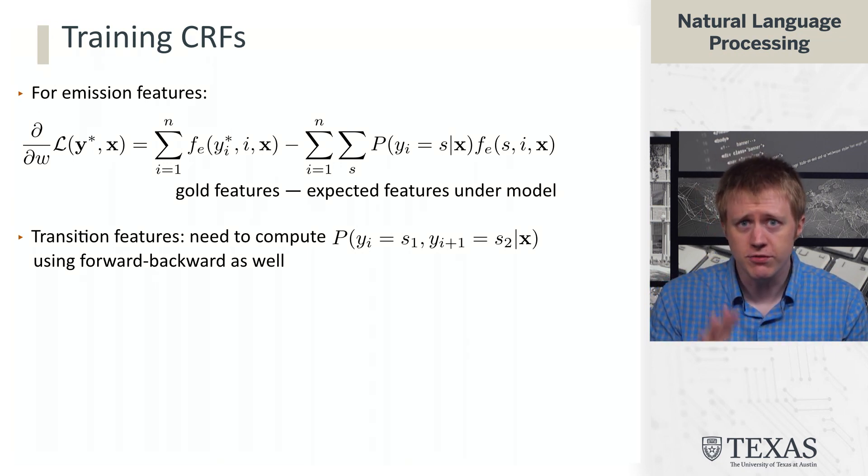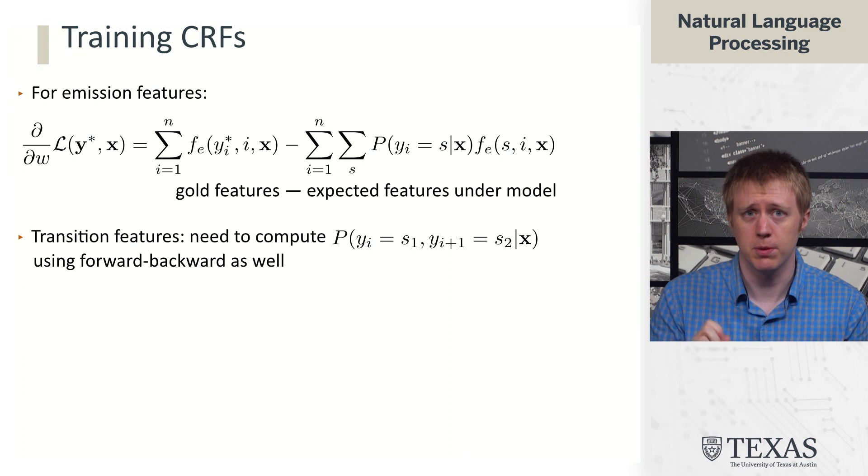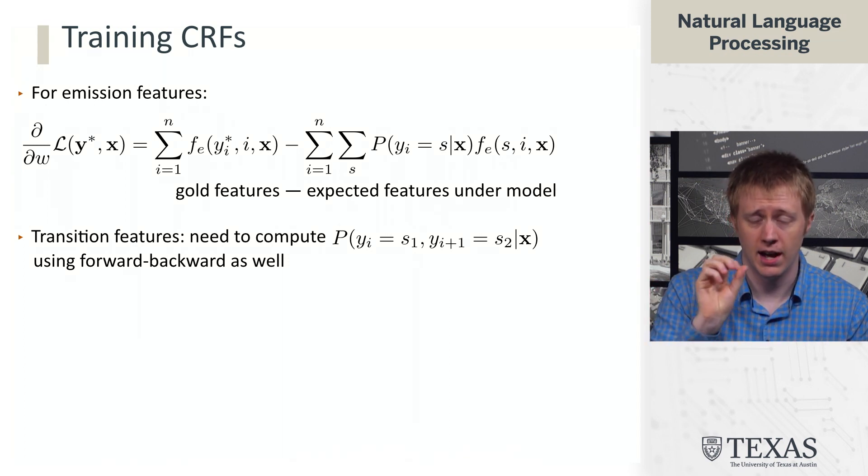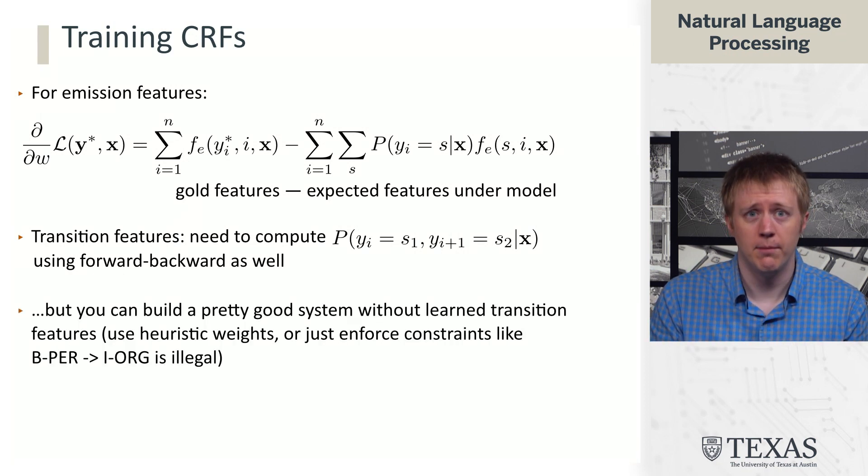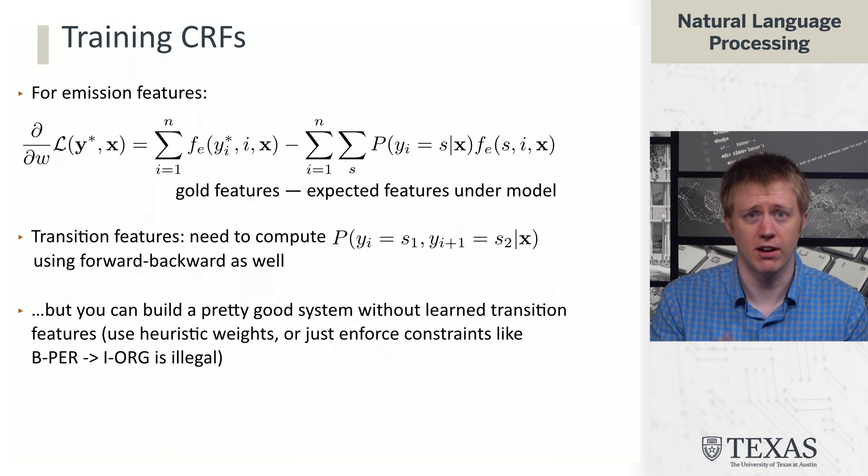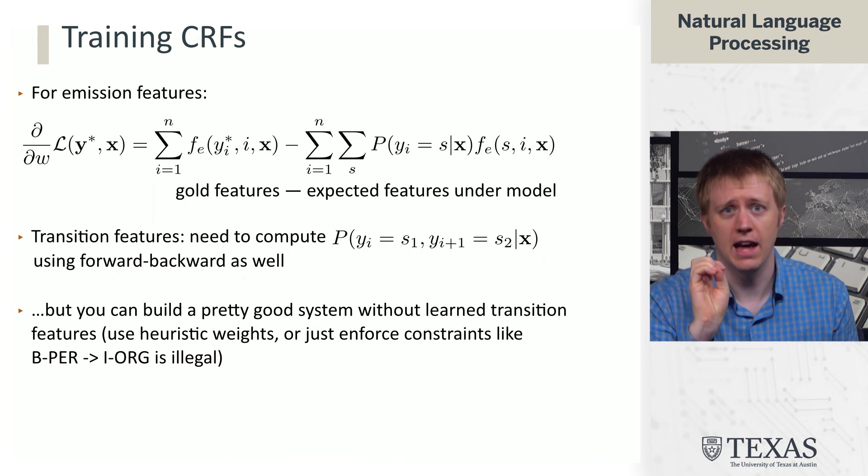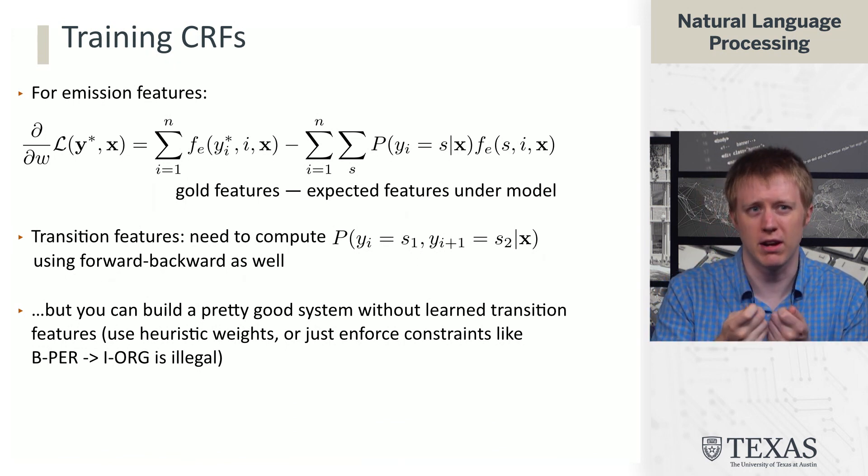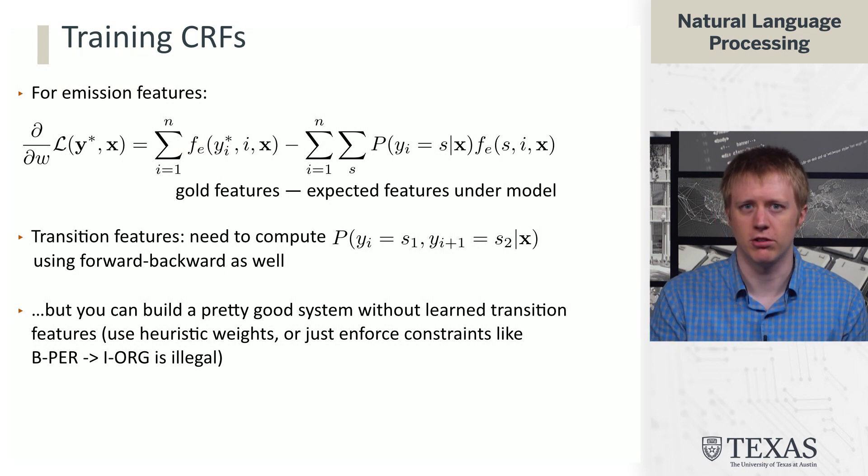The transition features, handling those is a little bit more complicated because we would need to compute the marginal over a pair of tags. So this is also possible with forward-backward, but we're going to ignore that here because you could actually build a very good CRF for NER using just emission features and just enforcing some kind of constraints on the transitions rather than actually learning their weights. So we're not going to go through the extra kind of mathematical complexity to set up how to do that transition case.